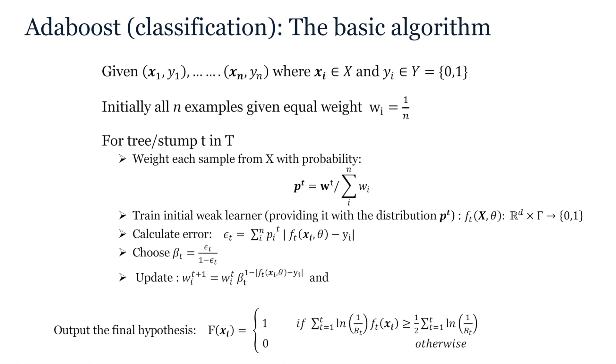So, here is pseudocode for the original AdaBoost classifier algorithm, which trains decision stumps or trees as weak learners. So, as you can see, and as stated on the previous slide, all examples are initially given equal weight, equal to 1 over n, where n is the number of examples.